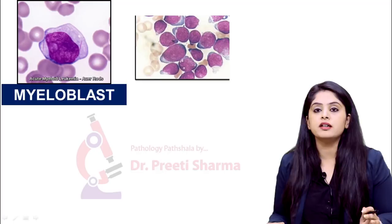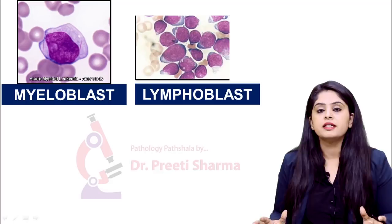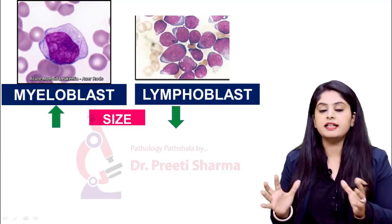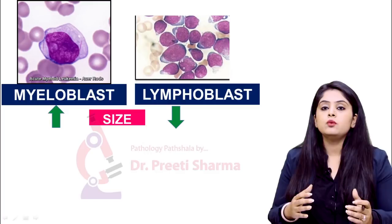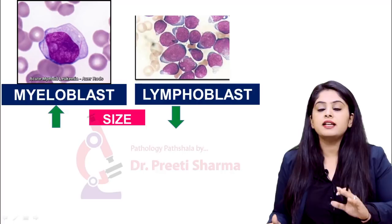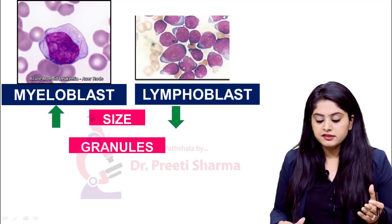The image shown here is a myeloblast and the next ones are a cluster of lymphoblasts. Let's take each cell individually. First, let's consider the size — the myeloblast is going to have a bigger size than a lymphoblast. The trick of remembering this table is that everything will be more in a myeloblast. M for myeloblast, M for more — whatever features I tell you, the greater amount will be in the myeloblast. So which cell has greater size? A myeloblast.